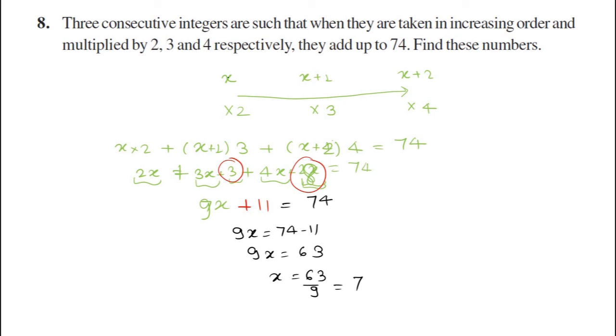So the first number will be 7. What will be the next number? x plus 1, so 7 plus 1 that is 8. This is 7 plus 2 that is 9. If you're writing in the exam, don't make the circle and write this type - just do it in a very good manner.